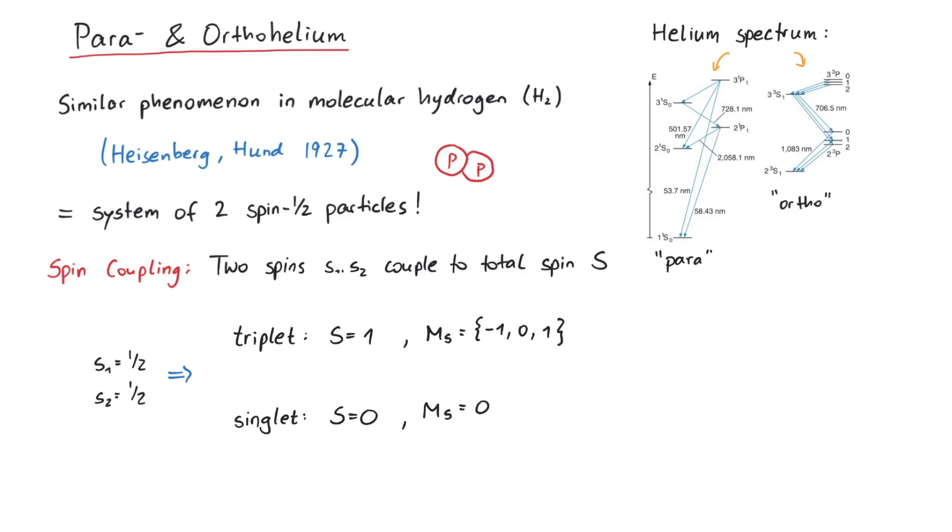Today, we know that there is only one kind of helium, and we can explain the difference between parahelium and orthohelium via the total spin number, being zero or one. Simply speaking, in ortho-states the two spins are parallel, whereas in para-states the two spins are antiparallel.